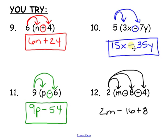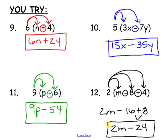Bring down your subtraction, 5 times 7y is 35y. Then here for number 11, 9 times p is 9p. Bring down your subtraction, 9 times 6 is 54. That's your final answer. For number 12, I wanted to show you an extra step. So 2 times n is 2n, bring down your subtraction, 2 times 8 is 16, bring down your addition, 2 times 4 is 8. Now we can go a little bit further with this one here. So 16 plus 8 is 24. So 2n minus 24. We can combine the two numbers there, so that's going to be our final answer.